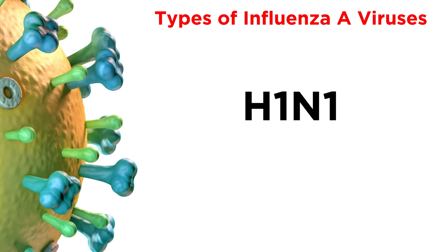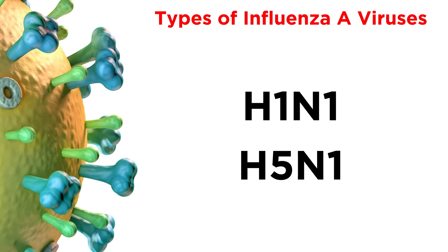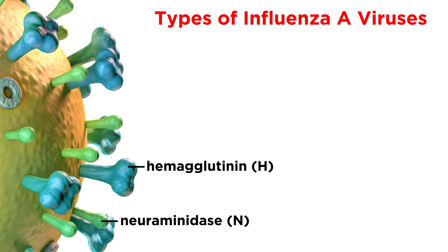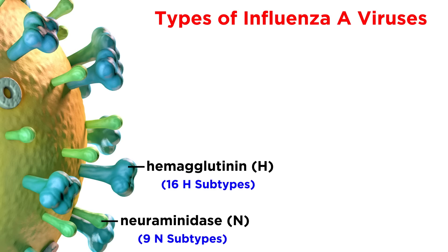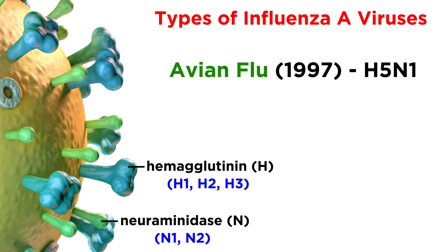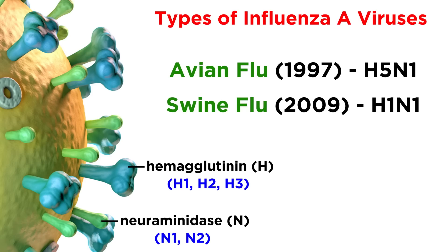You've likely heard people talk about H1N1 or H5N1 influenza viruses, but what does that actually mean? Influenza A viruses can be split into subtypes based on what kinds of hemagglutinin and neuraminidase spikes they have. These subtypes are given numbers — H1, H2, N1, N2, and so on. There are 16 H and 9 N subtypes total, but only H1, H2, and H3, as well as N1 and N2, are spread amongst humans. The avian flu of 1997 was caused by influenza virus H5N1, while the swine flu epidemic of 2009 was caused by influenza virus H1N1.